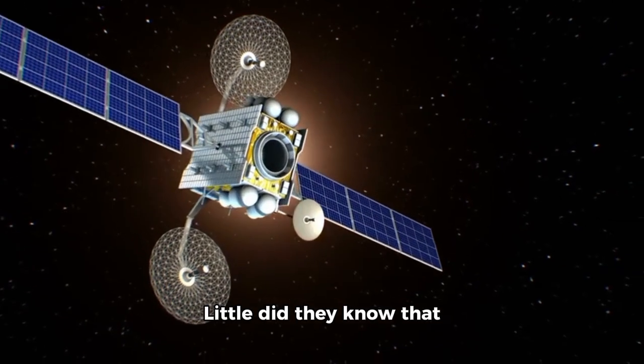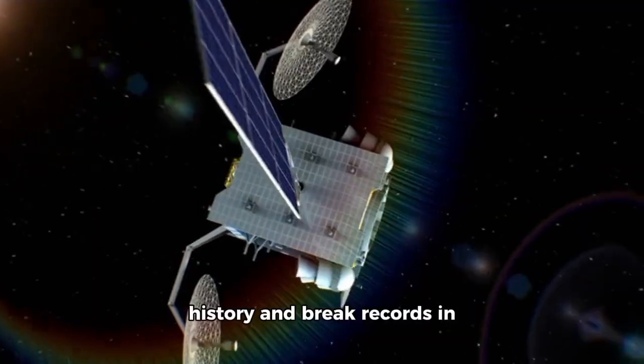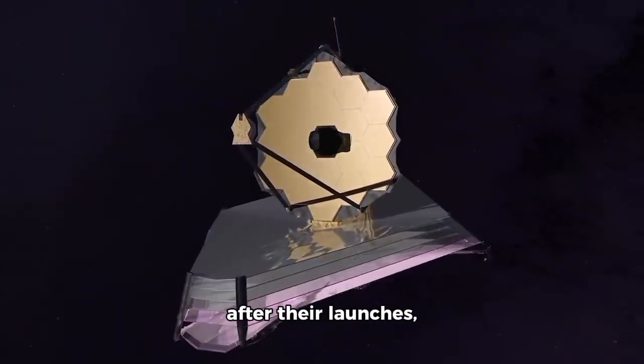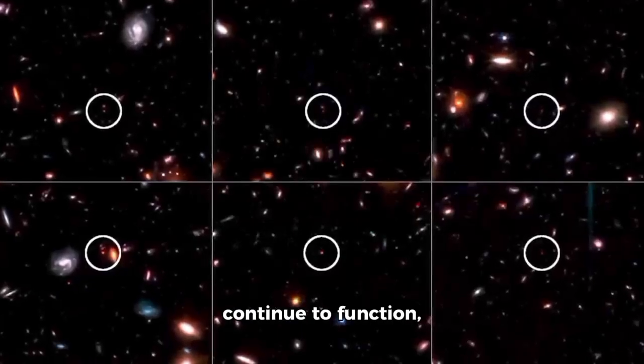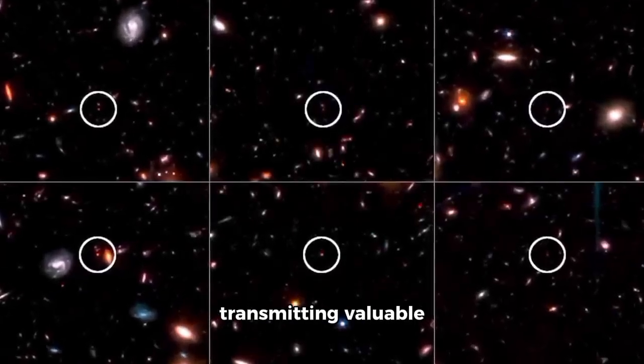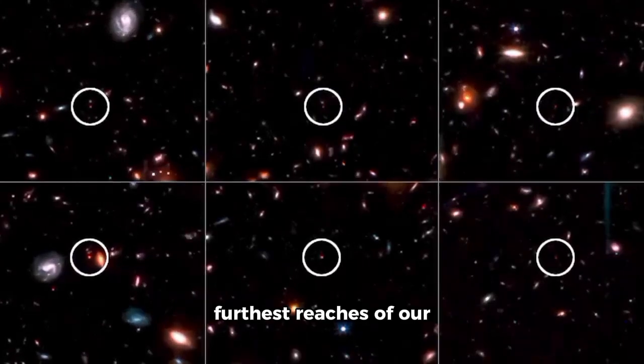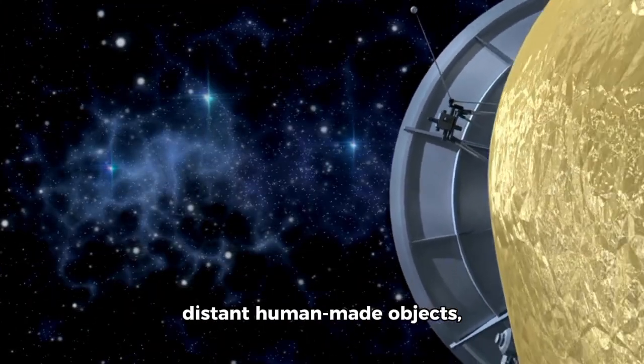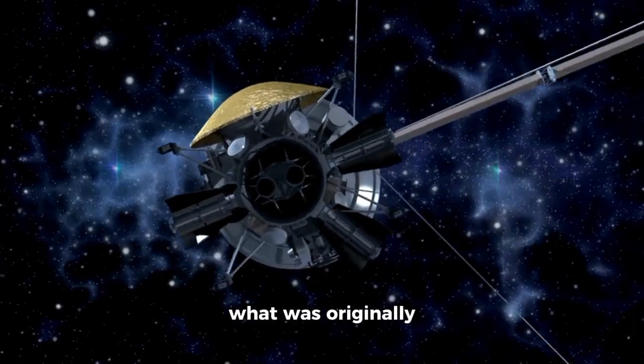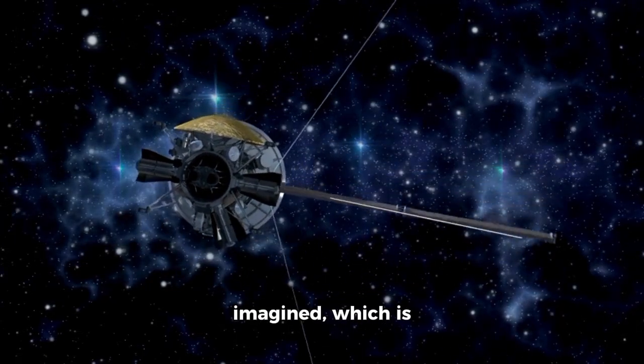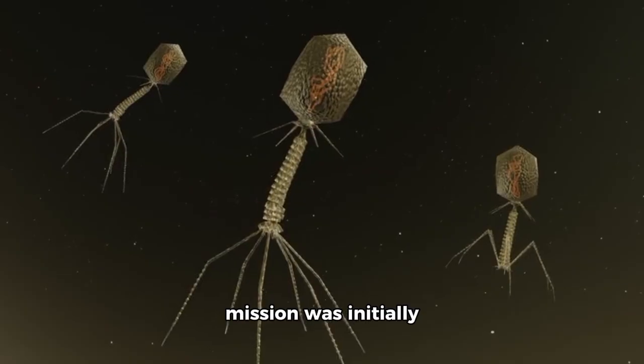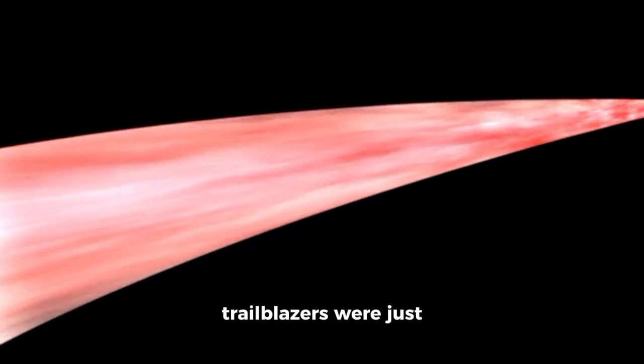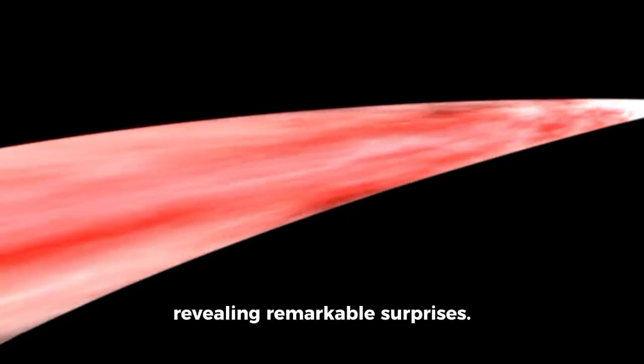Little did they know that these twin probes would make history and break records in space exploration. More than 45 years after their launches, Voyager 1 and Voyager 2 continue to function, transmitting valuable data daily from the furthest reaches of our solar system. These probes, now the most distant human-made objects, have traveled far beyond what was originally imagined, which is impressive given that their mission was initially planned for only four years.